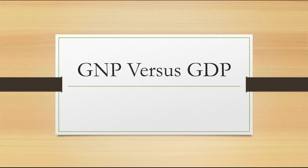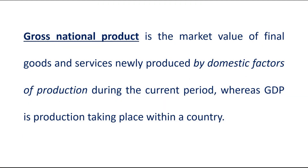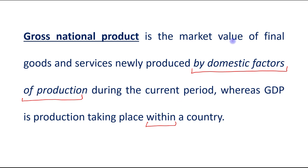Hello students, today's topic is Gross National Product versus Gross Domestic Product. Gross National Product is the market value of final goods and services newly produced by domestic factors of production during the current period, whereas Gross Domestic Product is the production taking place within a country. The complete definition of GDP is the same — it is also the market value of final goods and services newly produced — the key difference is just that GDP refers to production taking place within a country, while GNP refers to production by domestic factors of production.